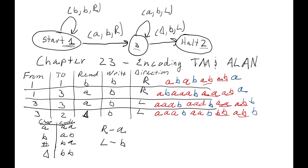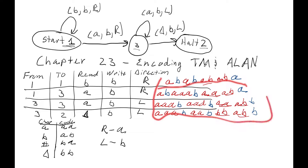There are lots of other ways we can do it — you don't have to do it this way. You can use your imagination and come up with your own way to code up a Turing machine, just as long as you can reproduce the table and from the table reproduce the original machine. Now that we have valid codes for Turing machines, we can create new Turing machines that will take in as input these codewords and analyze the Turing machine and maybe answer questions about what that Turing machine does.